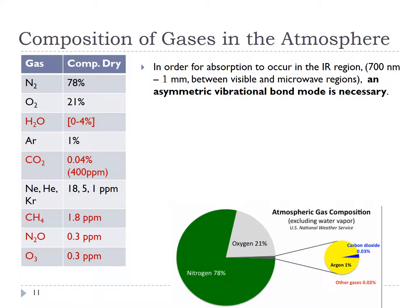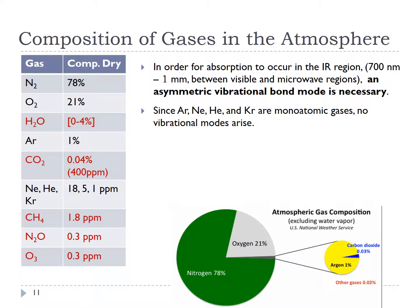In order for a gas to be labeled a greenhouse gas, it needs to have an asymmetric vibrational mode — when it vibrates, it needs to create a net dipole. The noble gases — argon, neon, helium, and krypton — are monatomic. They don't have vibrational modes and hence can't form a dipole, so noble gases are not greenhouse gases.